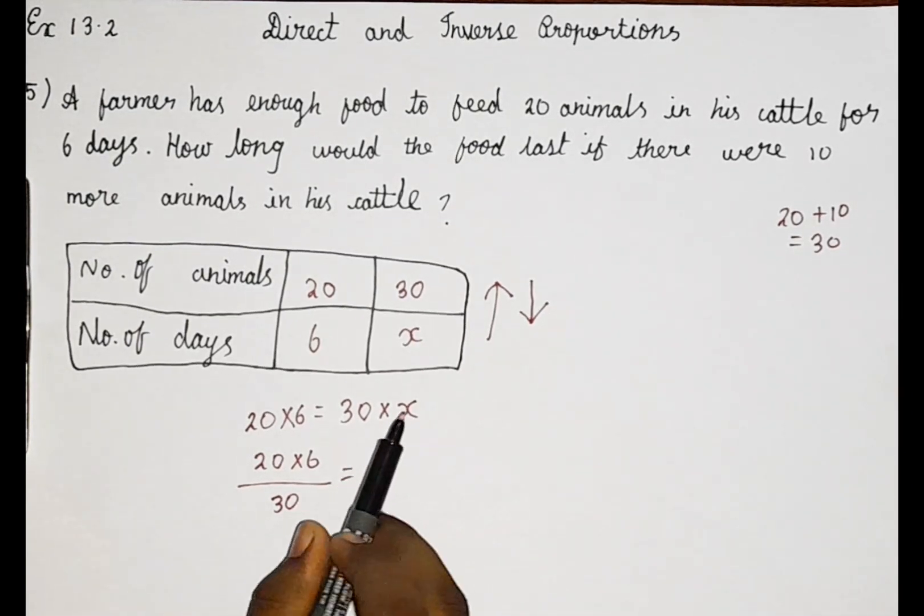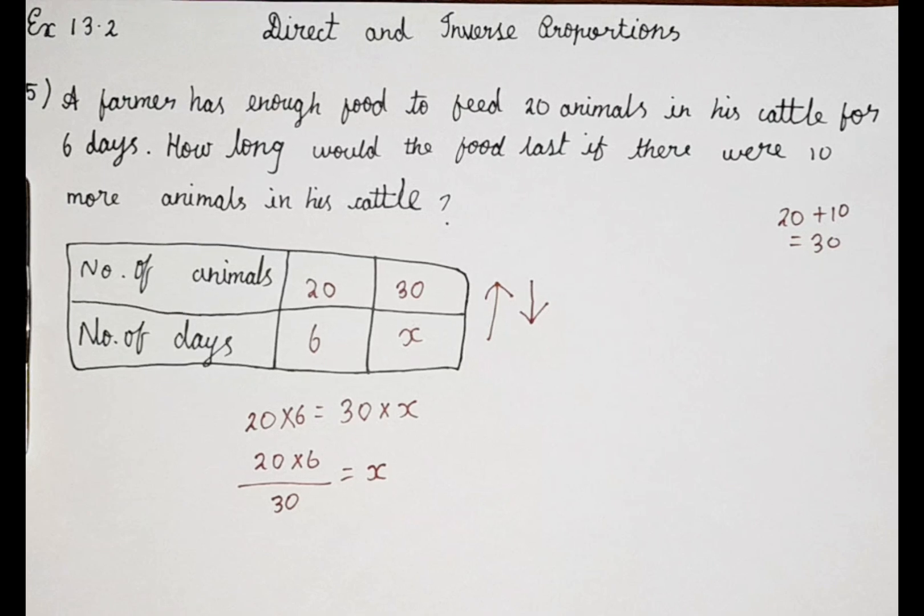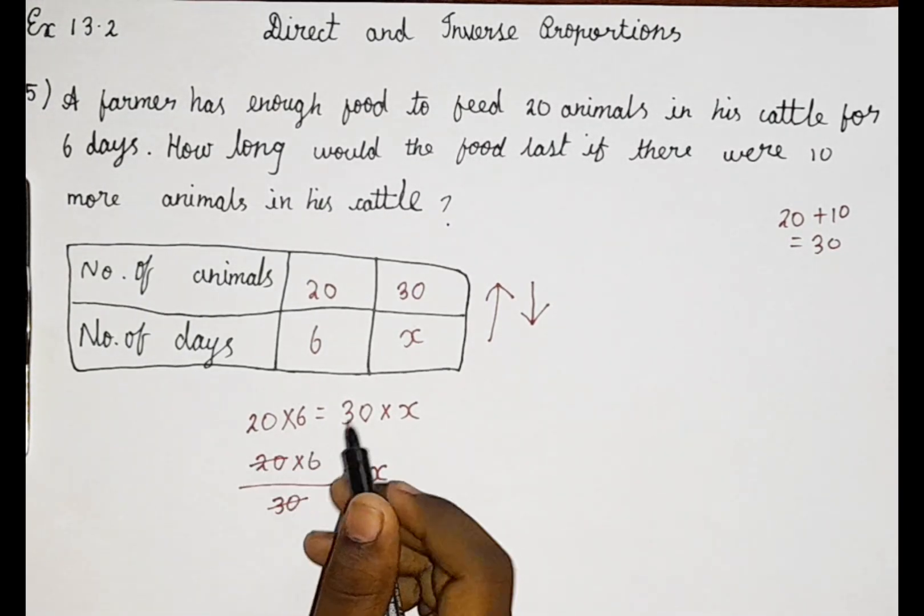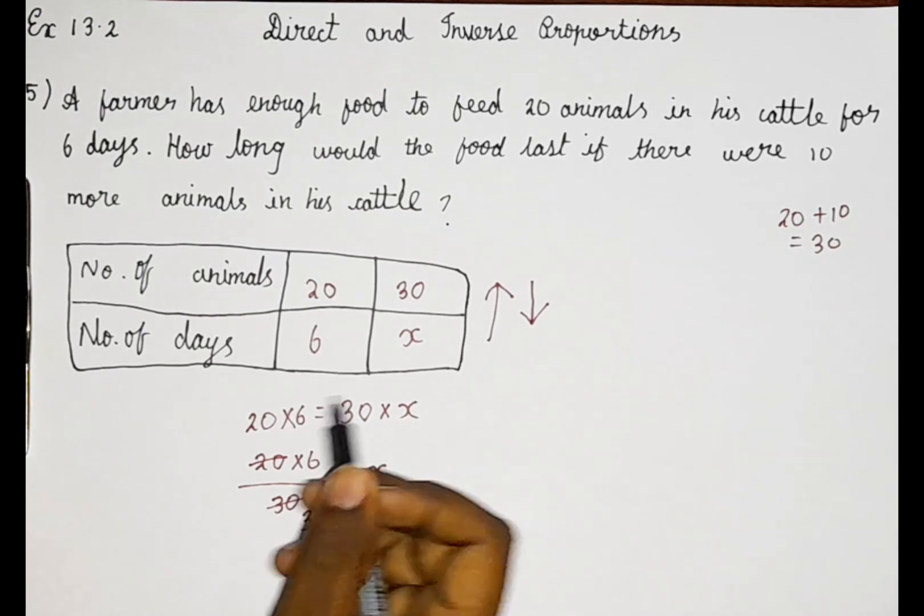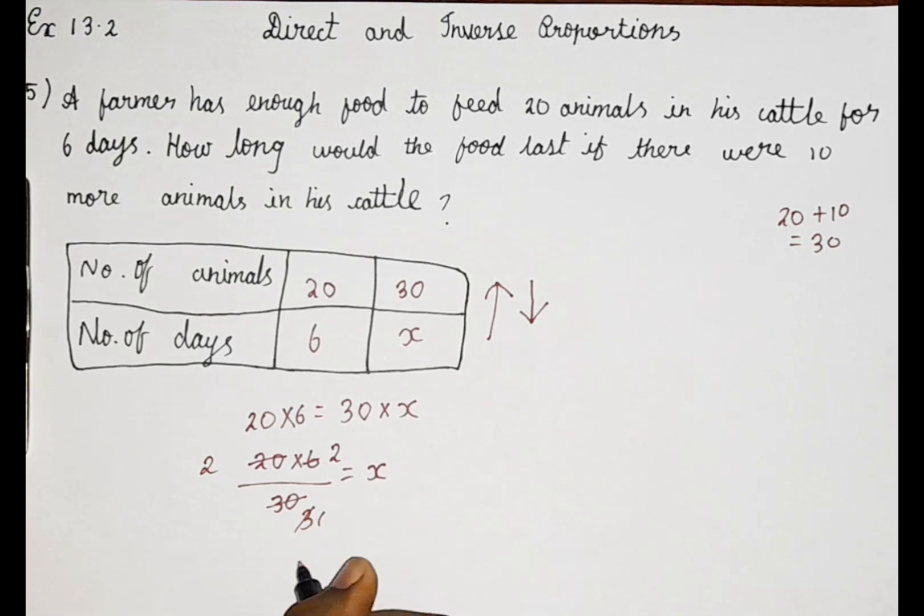Why divide by 30? When multiplication goes to the other side, it becomes division. We can cancel using the 10 table itself. 10 threes are 30, 10 twos are 20, 3 ones are 3, 3 twos are 6.